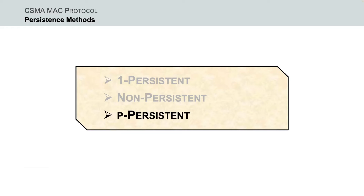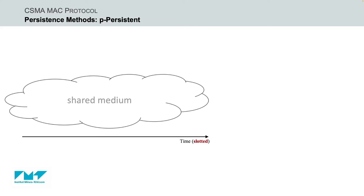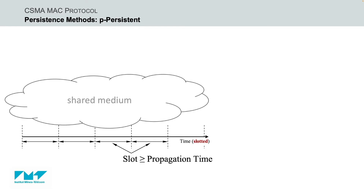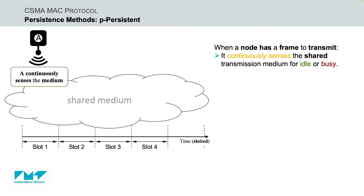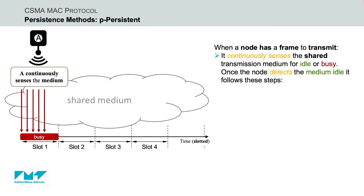The third and final method is the P-persistent CSMA method. The P-persistent method is employed if the continuous time of the shared channel is divided into discrete time intervals called slots. Each slot duration is equal to or greater than the maximum propagation time. Under the P-persistent method, when the transmitting node has a frame to transmit, like one-persistent, it continuously senses the shared transmission medium for idle or busy state. Once the node detects the shared medium idle, it continues with the following steps.